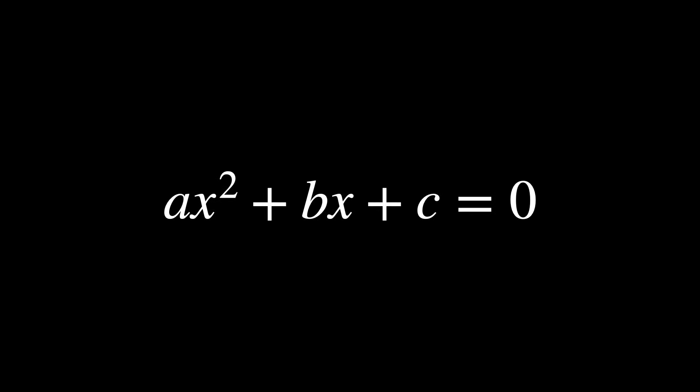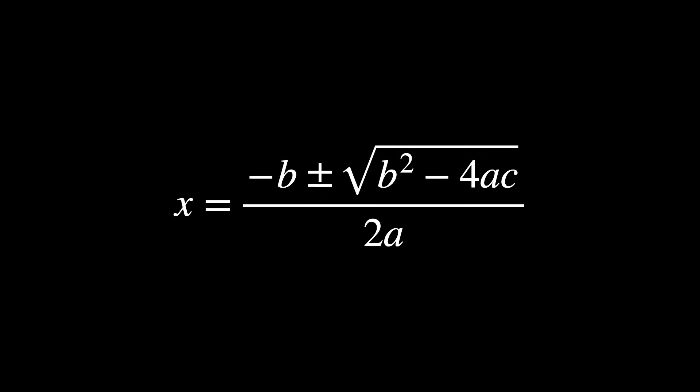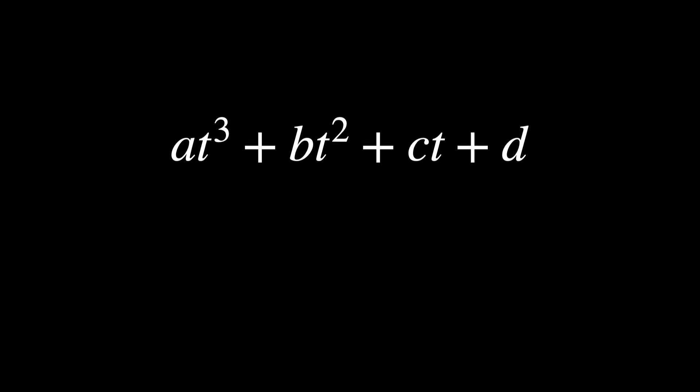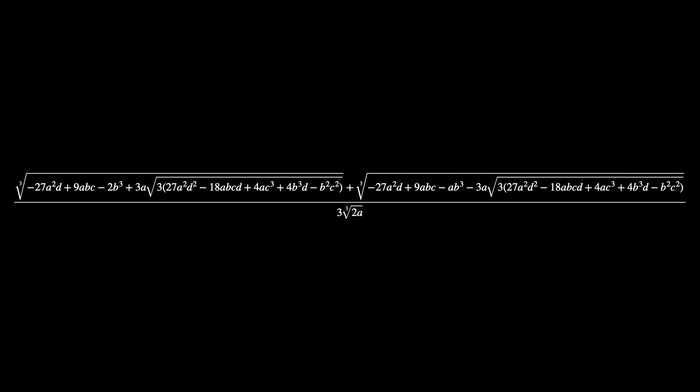The first and simplest type is this. Solving the equation means finding the values of x that make the equation true. These values are called roots. To find these roots, mathematicians found this quadratic formula. Then when it's a cubic equation, mathematicians found this quite long and complicated formula.